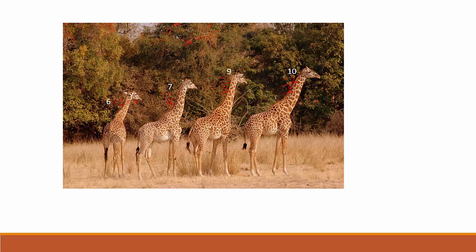So eight feet is the average height of these giraffes. How can we do it mathematically, as we saw in the previous example? Let us add all the heights — there are four giraffes. If we divide the sum of all the heights by the number of giraffes, we get eight, which is the average.